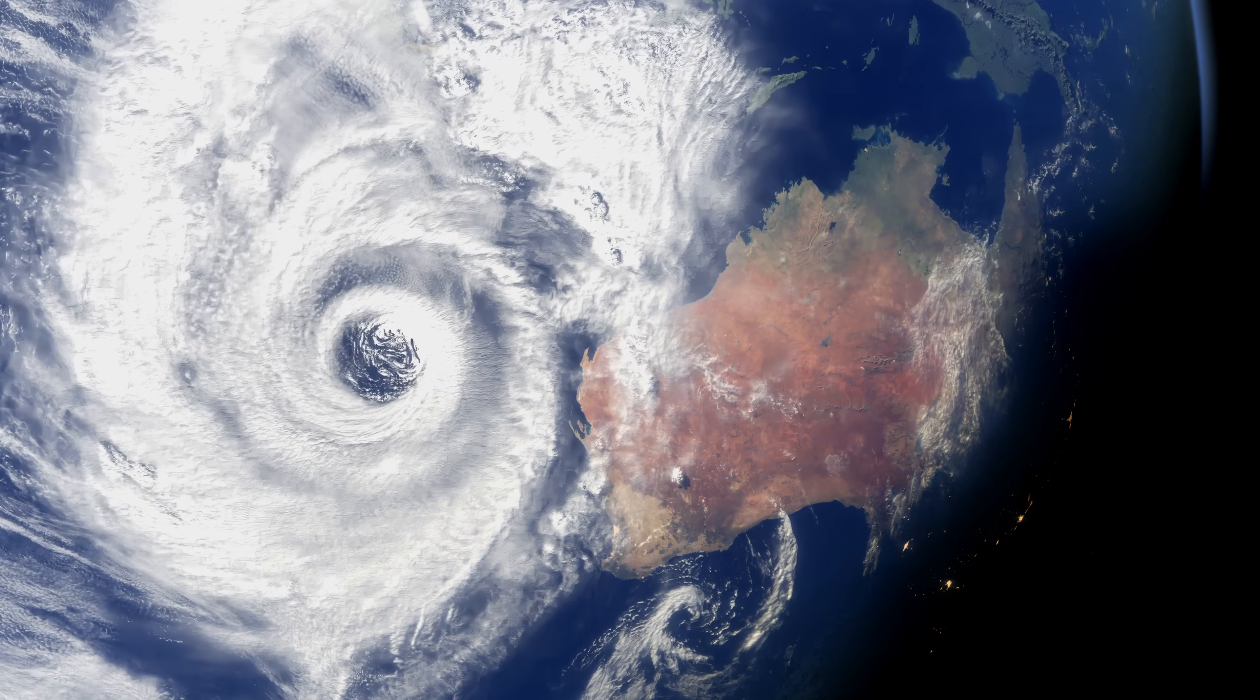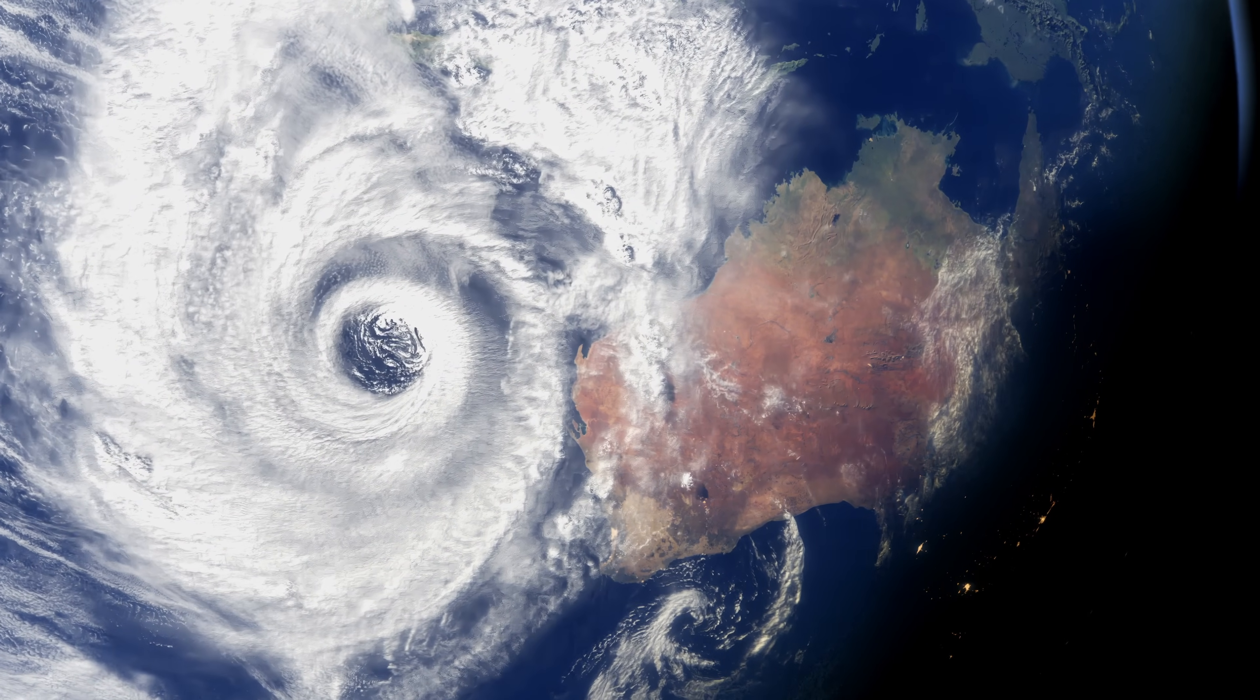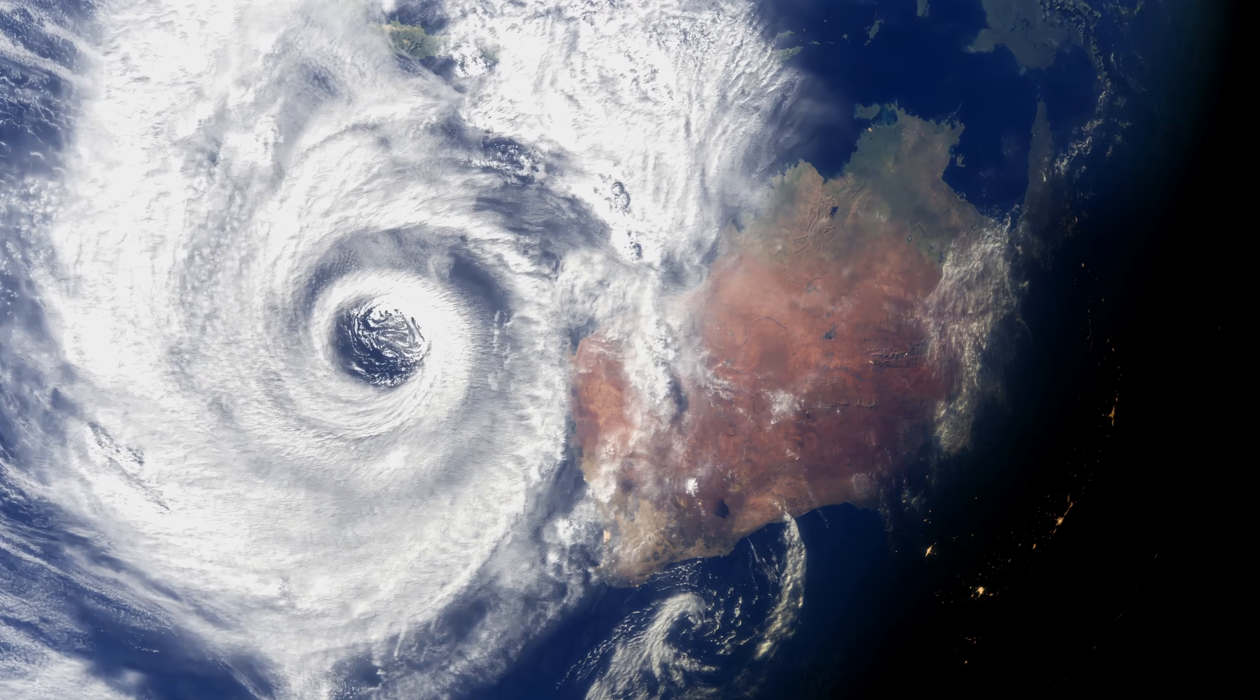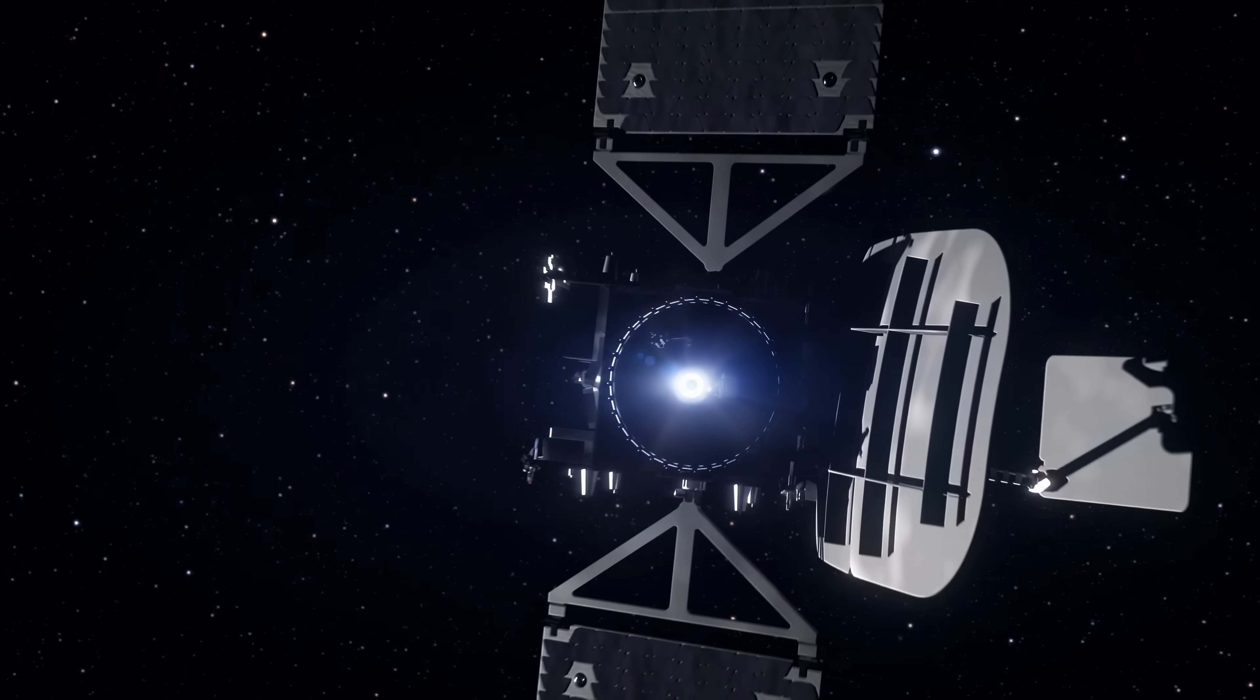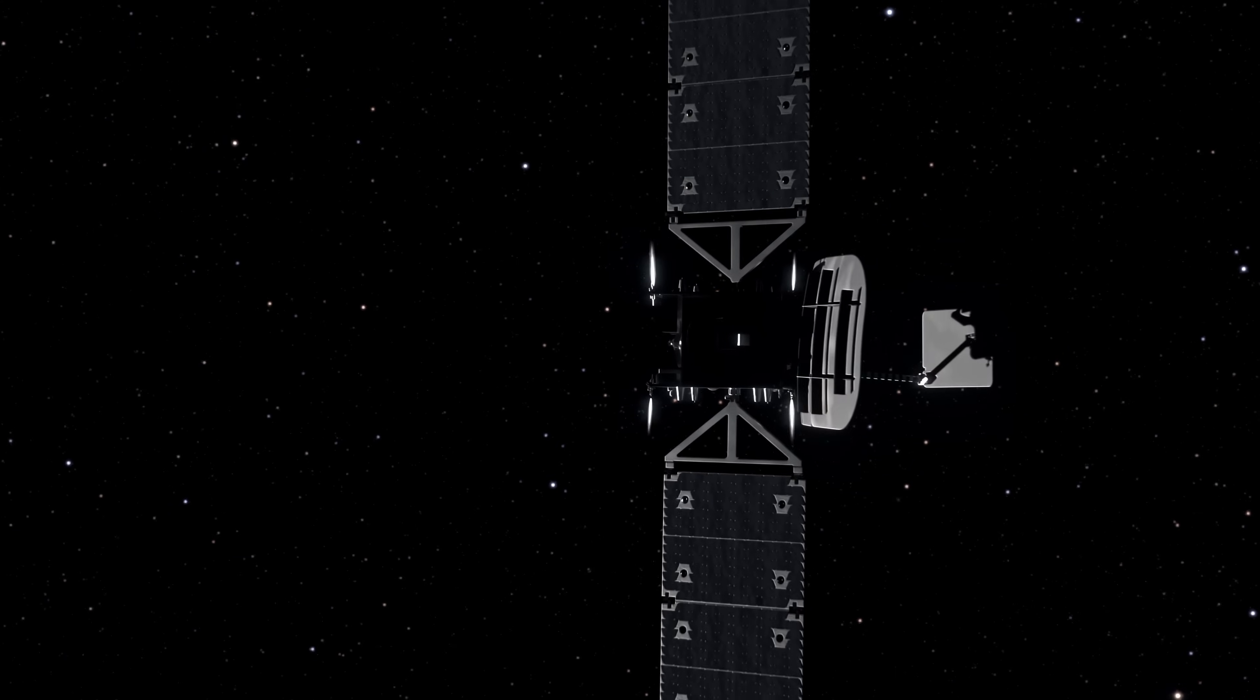If there's an acute need for connectivity, like a natural disaster that takes out terrestrial fiber and microwave towers, Astronis has a satellite on orbit that can rapidly respond.